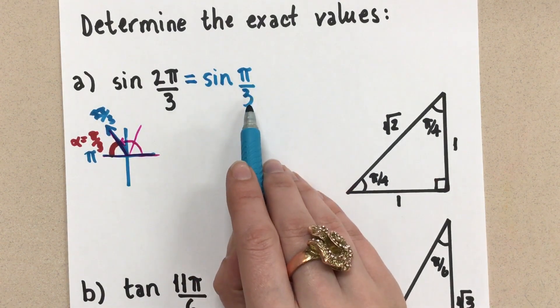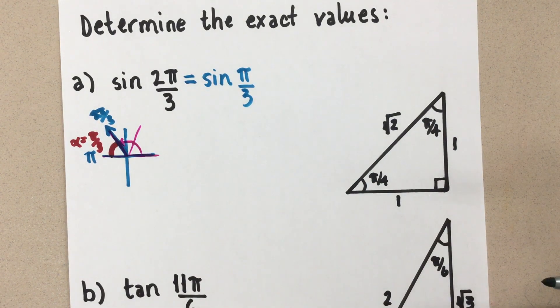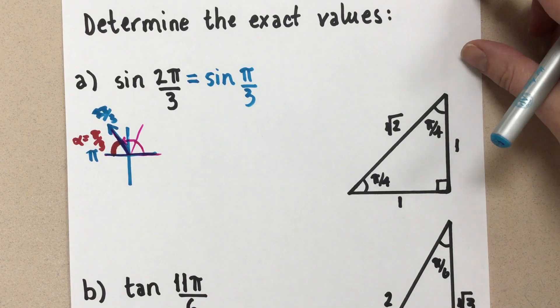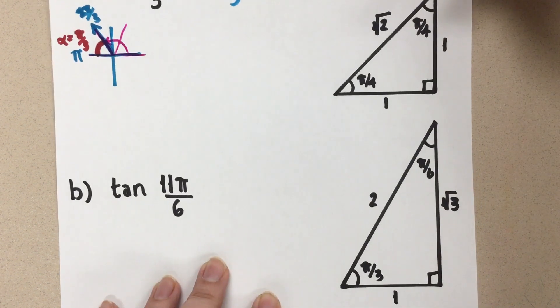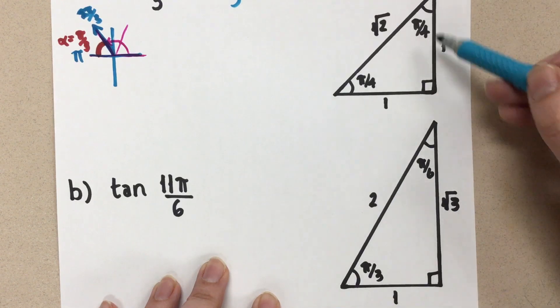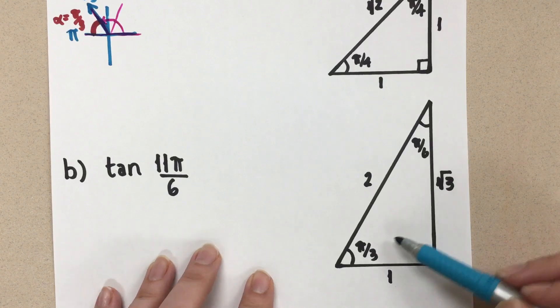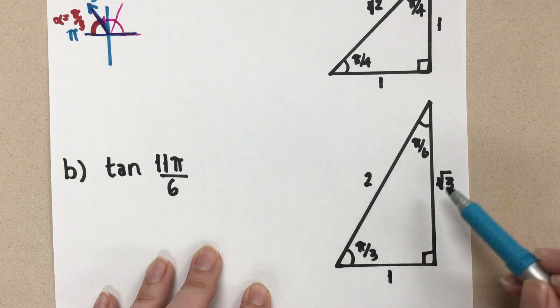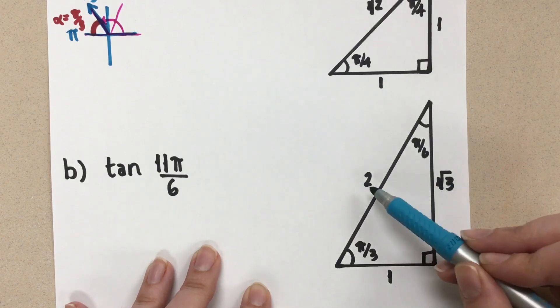Sine of π over 3. So if we want exact values, we know we need to be using our special triangles, or you can use your values if you have a unit circle handy with the special angles on it, but we're going to use the special triangles today. So I've written them both here. If we're looking for sine of π over 3, I'm not going to use this triangle because this one is for π over 4. I'm going to use this one here. There's my π over 3.